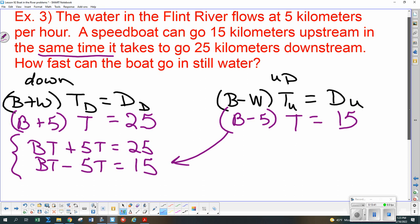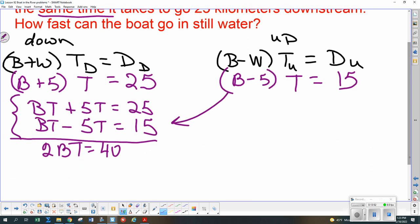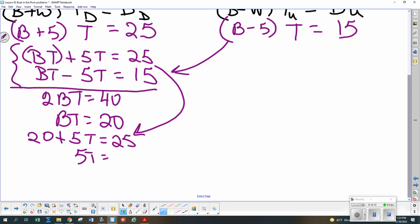So you guys just told me about getting the correct answers, but that you had two different approaches. Some of you did it just like this and said 2BT is 40, which means that BT is 20. And then you could take either one of these. It really does not matter which. So if we took the top one and said that this BT is now 20 plus 5T is 25, that would mean that 5T has to be 5. So T has to be the one hour. And then if B times 1 is 20, that means that B has to be 20 kilometers per hour for the boat.